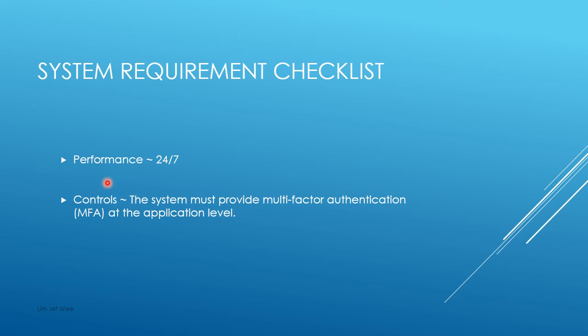Those are the basic three. Now for the other two: performance and control. For performance, bosses and owners want the system available 24 hours a day, seven days a week, non-stop. That does not mean you can't schedule downtime — you can still schedule downtime.